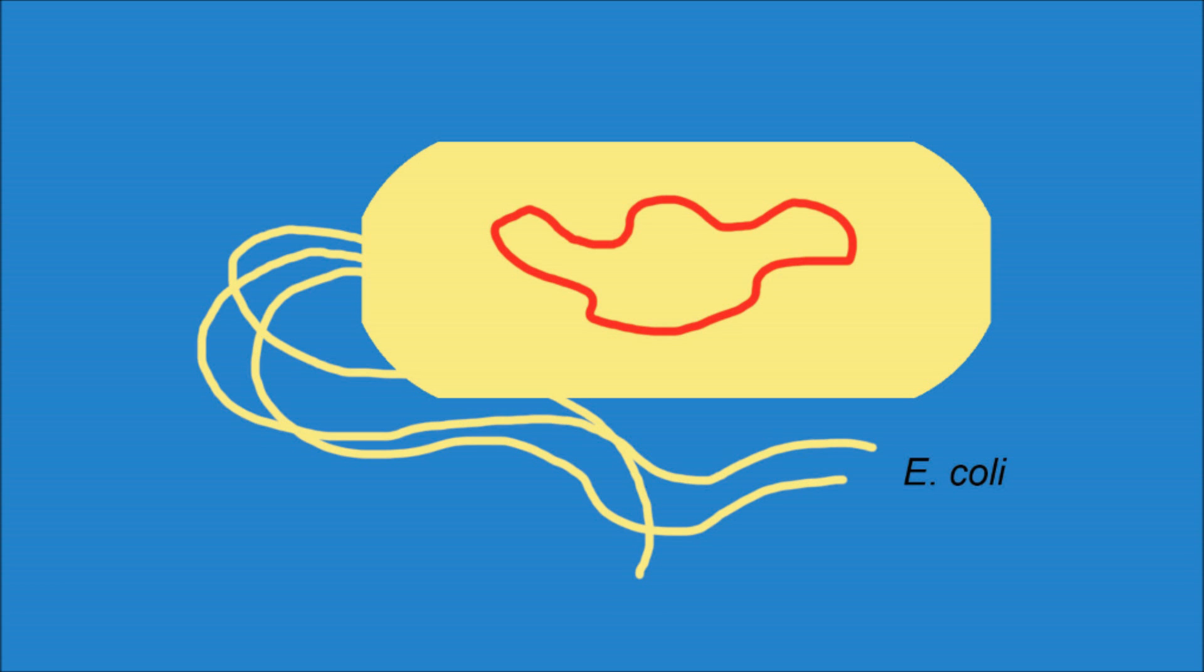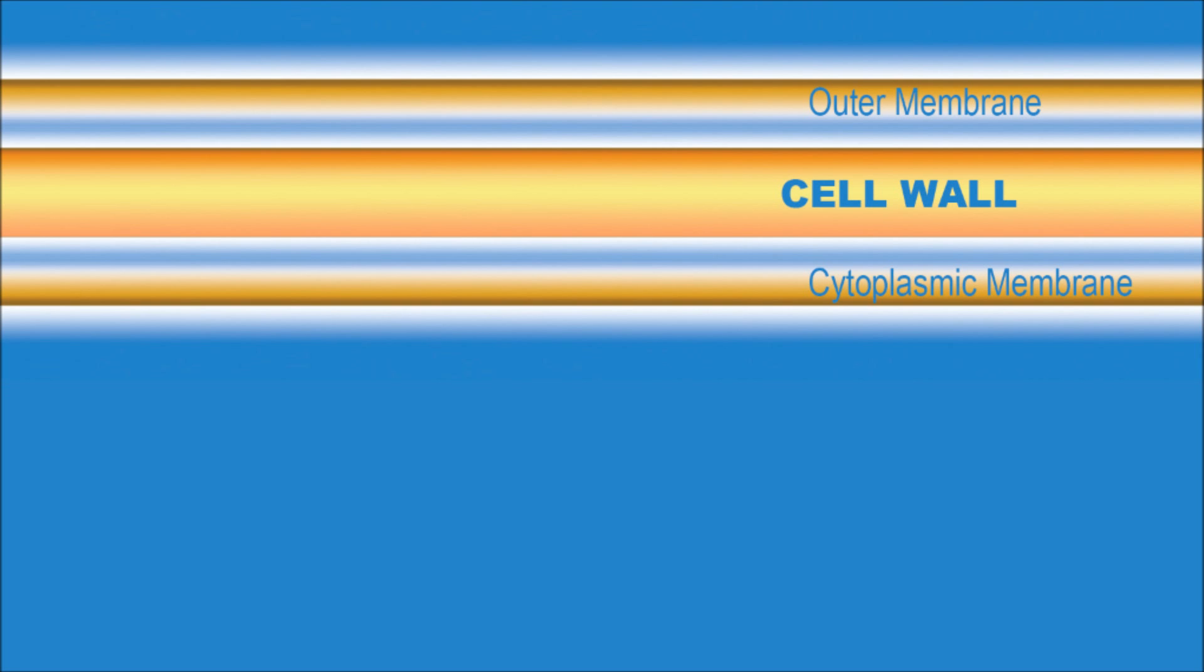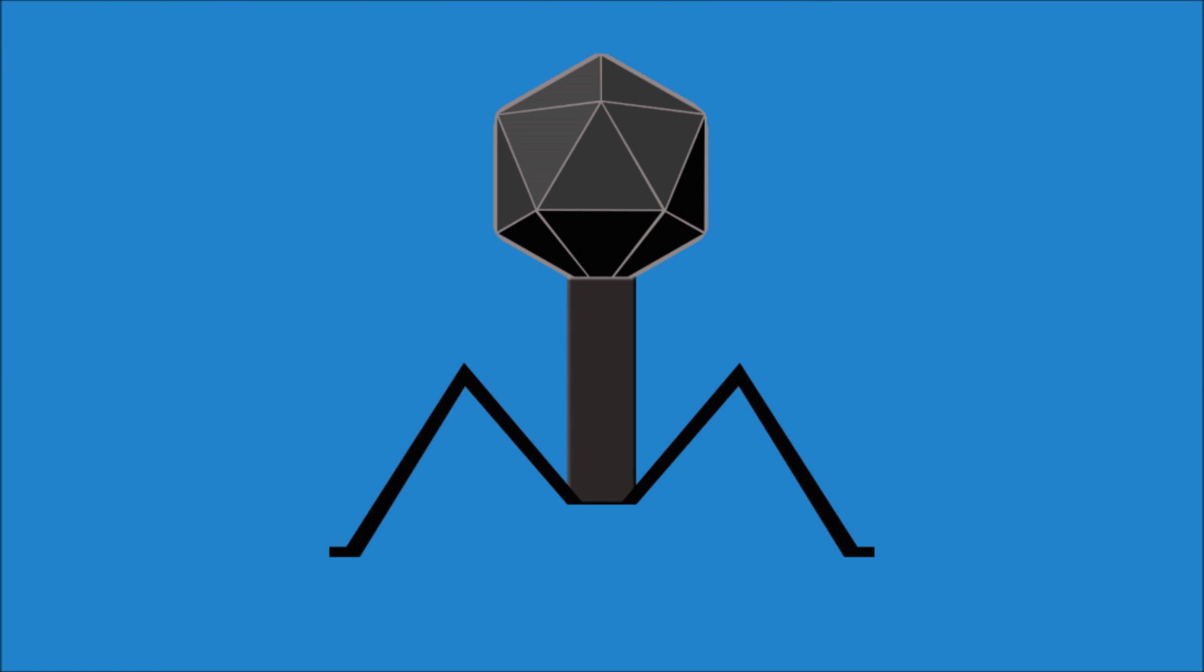Now, E. coli are gram-negative bacteria, which means they have two membranes with a cell wall in between. Bacteriophage lambda is a nasty little virus that preys upon these unfortunate bacteria. The virus is an obligate parasite, so in order to reproduce,